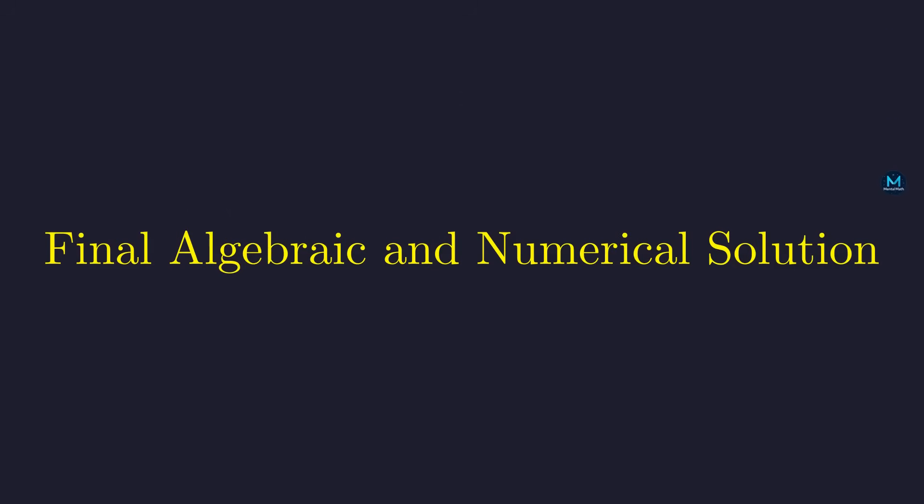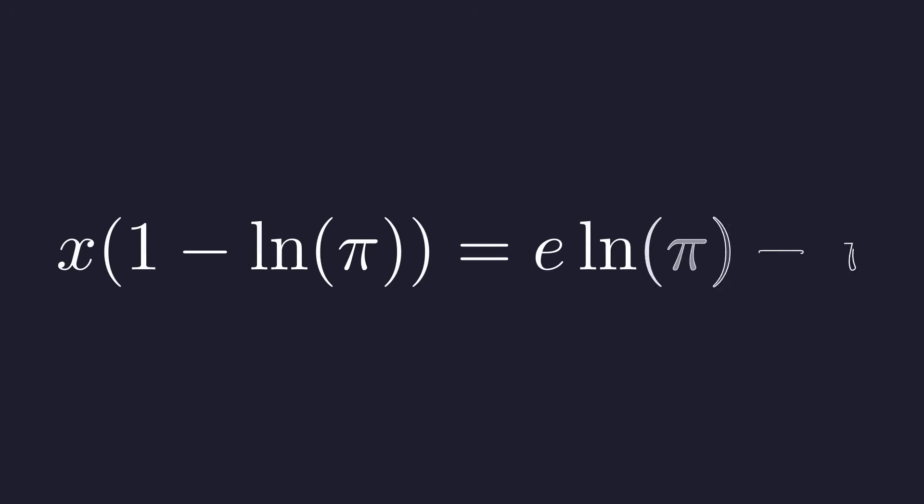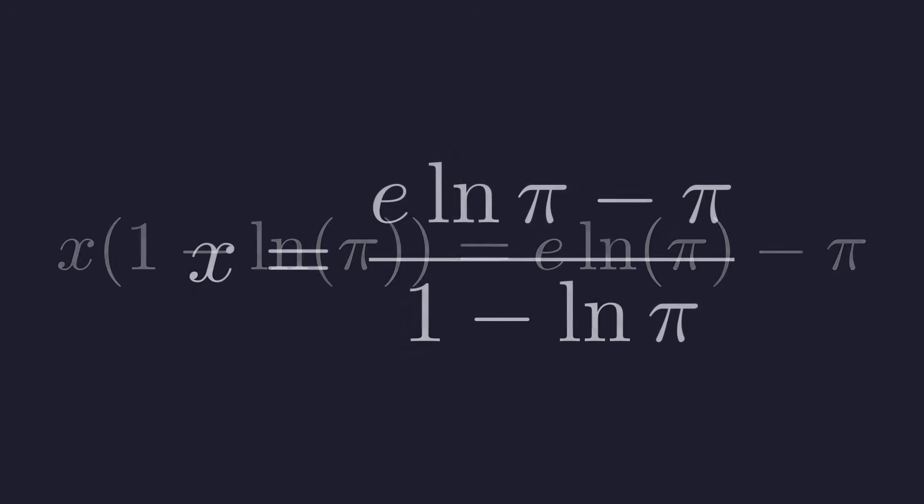Now let's determine the final form of our solution. Starting from our factored form, we can now solve for x by dividing both sides. This gives us the exact solution.